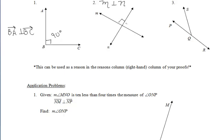For number two, if I told you that line M is perpendicular to line N, we get four right angles there.